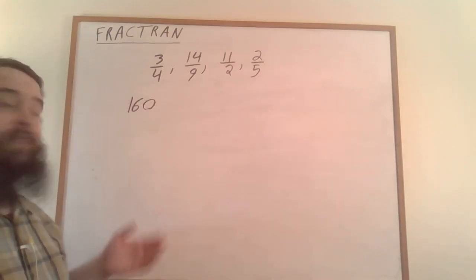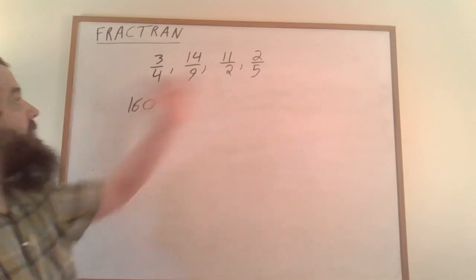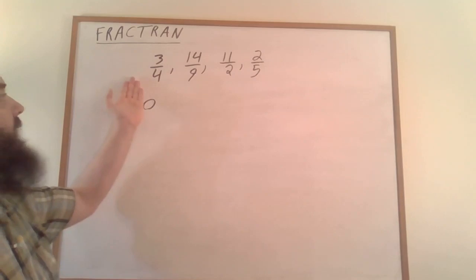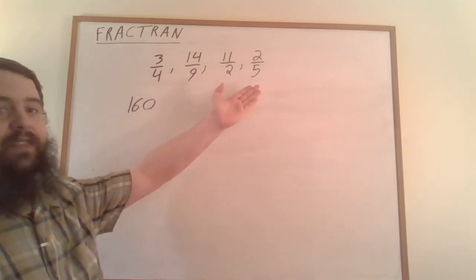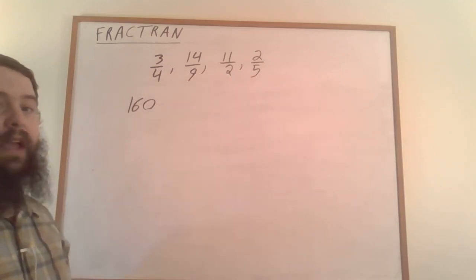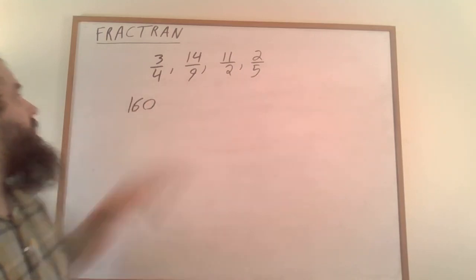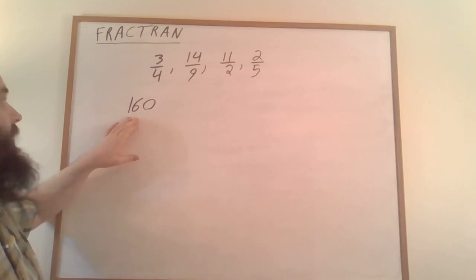Let's feed 160 into this program. We take this number and find the first fraction in the list that we can multiply it by to still get a natural number. In other words, we're looking for a denominator that divides evenly into 160.